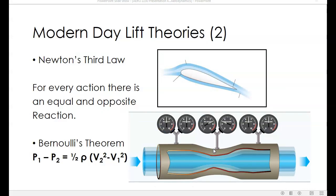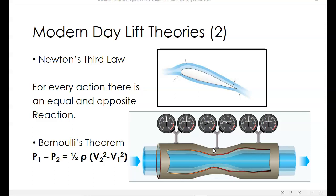There are two dominant theories that explain how an airfoil produces lift. The first one is Newton's Third Law, which states that for every action, there's an equal and opposite reaction. The second one is Bernoulli's Theorem, which explains the behavior of fluid as it accelerates through a narrow opening. As the airfoil moves through the air, the relative wind hits the bottom of the airfoil and also flows over the top, resulting in what's called a downwash. That downward motion of air after flowing over the airfoil results in an opposite reaction, according to Newton's Third Law, and it pushes the airfoil up.